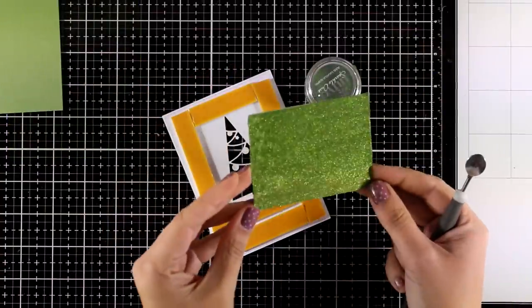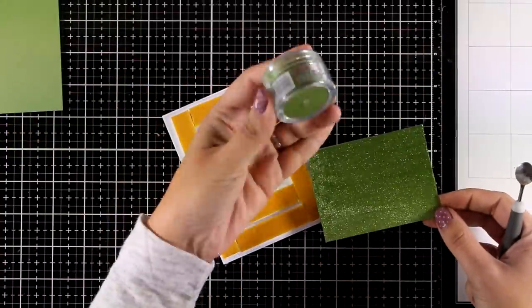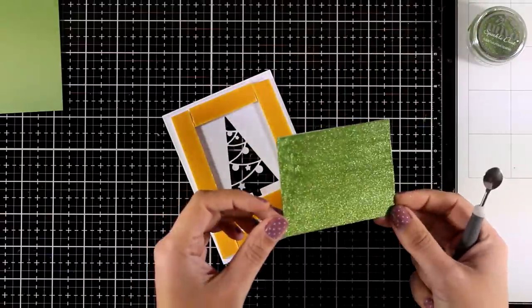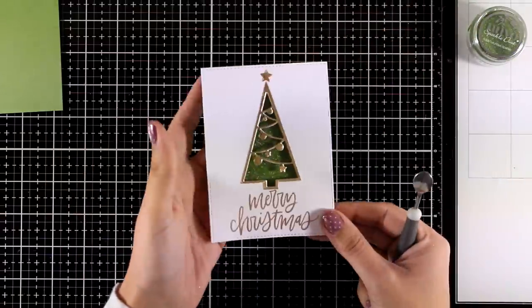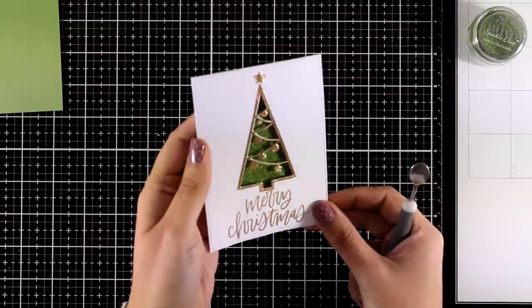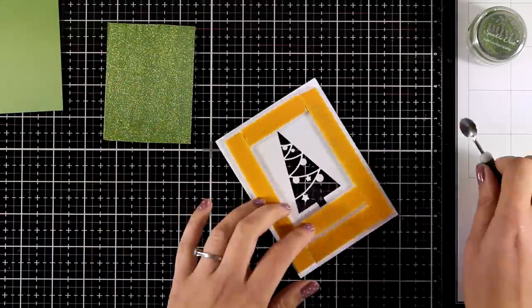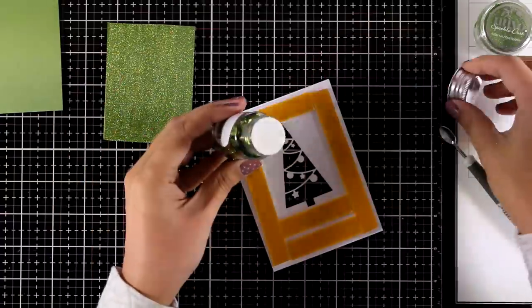I also created this piece of cardstock using the technique that I did for the first card with the sparkle dust and this is going to go at the back of my window. Now you can leave it as it is just like I did with the first card but just for the fun of it, for this card I am going to add some sequins inside and turn it into a shaker card.